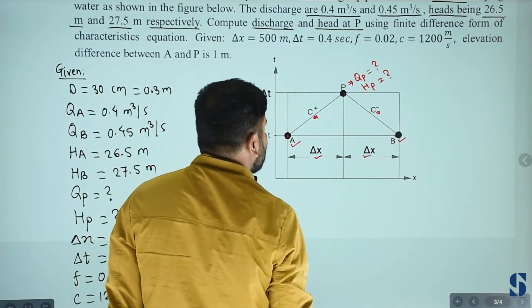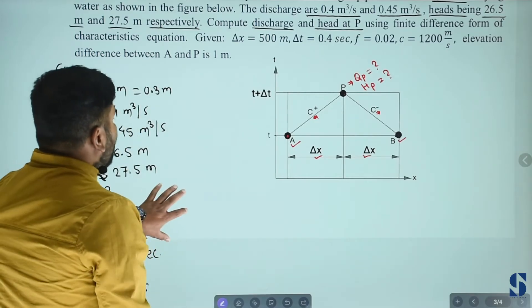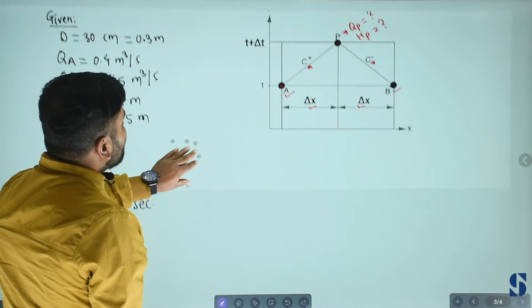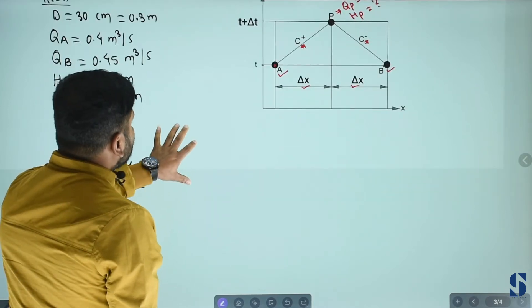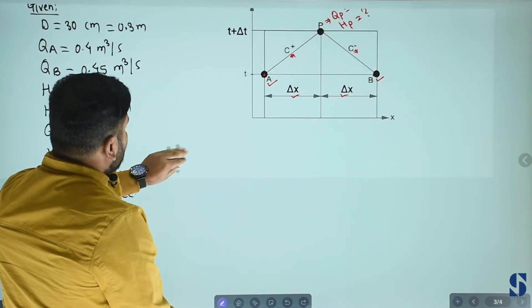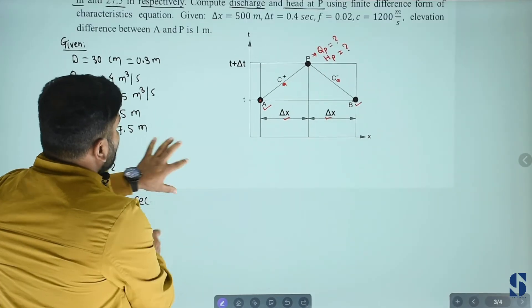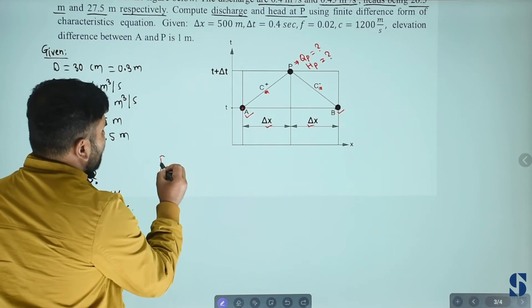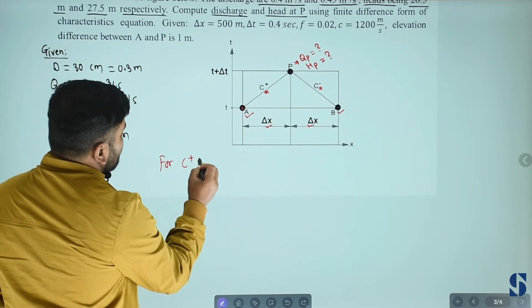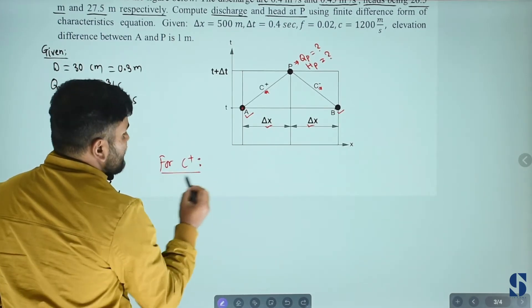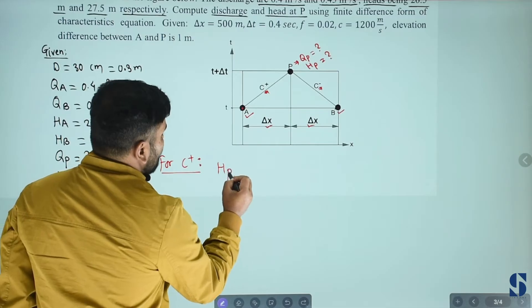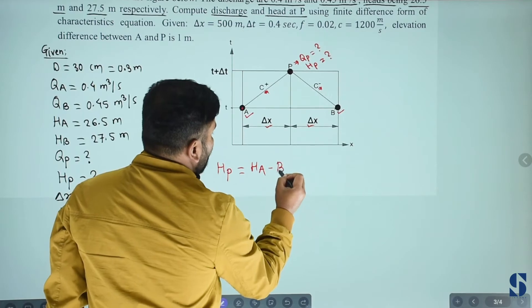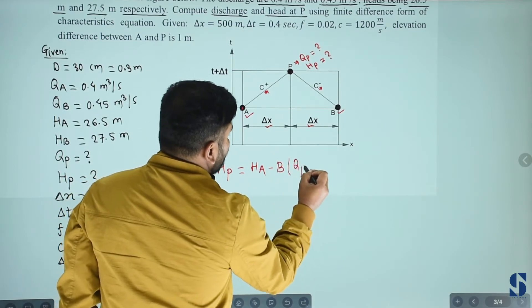I'm going to develop equation earlier. For C plus characteristics, the equation is HP equals to HA minus B times QP minus QA.